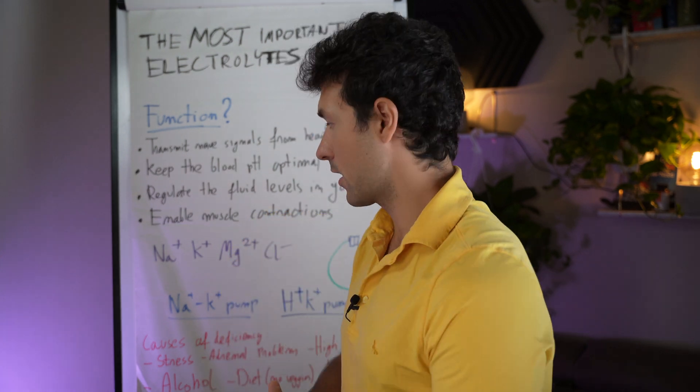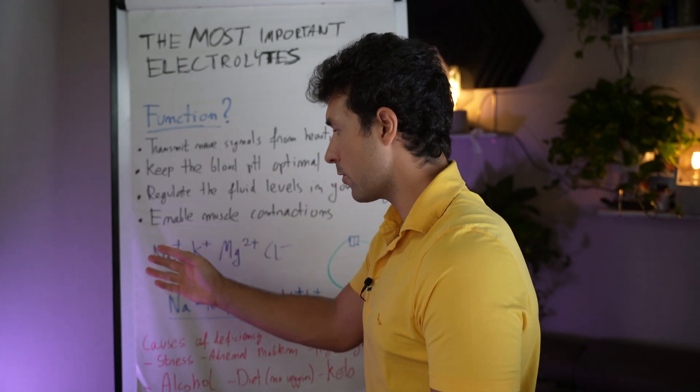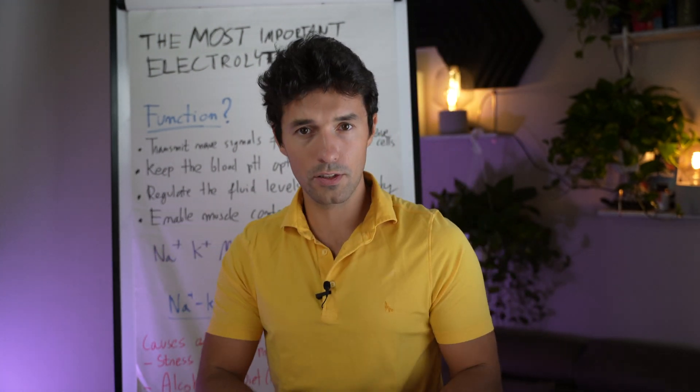Electrolytes are minerals like, for example, sodium, potassium, magnesium, and chloride. These four are pretty much the most important in your body.